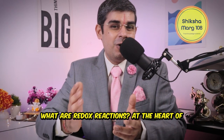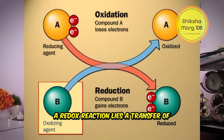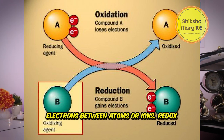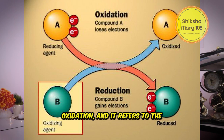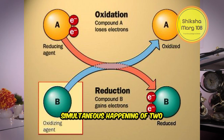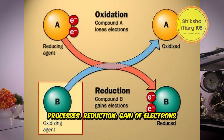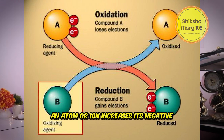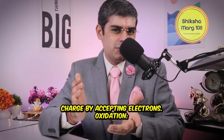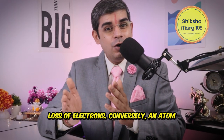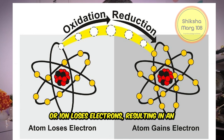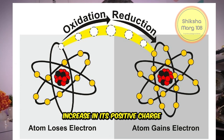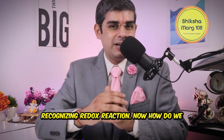What are redox reactions? At the heart of a redox reaction lies the transfer of electrons between atoms or ions. Redox is an abbreviation for reduction-oxidation, and it refers to the simultaneous happening of two processes: Reduction — gain of electrons, where an atom or ion increases its negative charge by accepting electrons; and Oxidation — loss of electrons, where an atom or ion loses electrons, resulting in an increase in its positive charge.